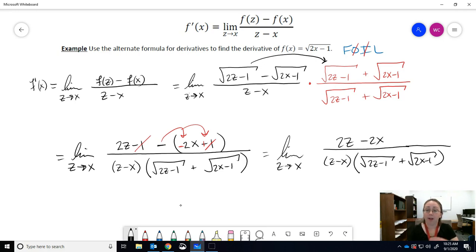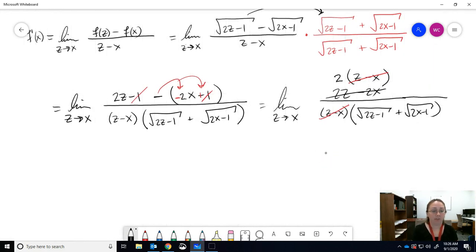All right, do you see what I see here? On top, we have a GCF. If I factor out the GCF of 2, what's left? Z minus X. Cross this out, because I rewrote it up top, factored. Now I see what I needed. The parentheses are the same, so they cancel. And now, that got rid of our 0 over 0 problem.